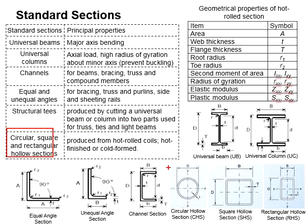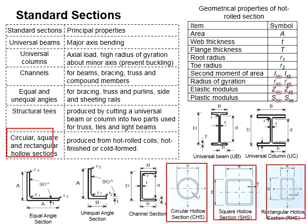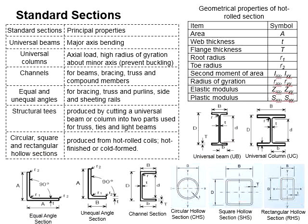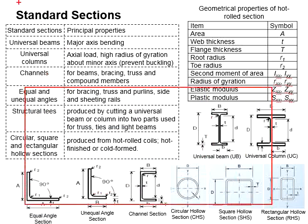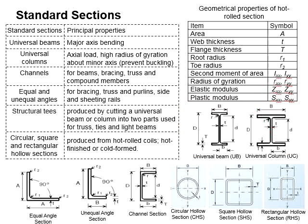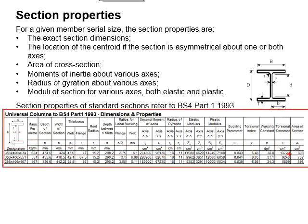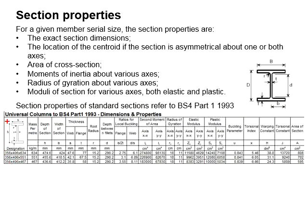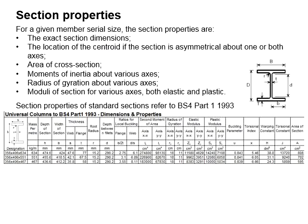Hollow sections can appear in the form of circular, square, and rectangular sections, produced from hot-rolled coil. These standard sections have standardized dimensions of different sizes in accordance with British or European standards, so designers can use their properties to design steel structures. The dimensions and properties are indicated in diagrams and tables, and can be obtained from tables of properties as given in BS4 Part 1, which lists sizes, dimensions, and geometrical properties.